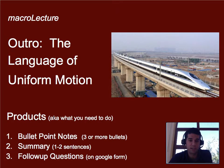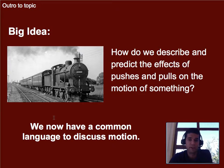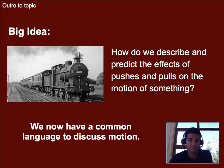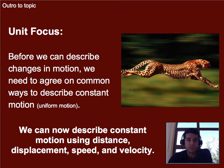We've been talking about the language of uniform motion. Uniform just means consistent — in this case it's constant speed or constant velocity. The big idea we were trying to begin approaching, and we're not there yet, it's going to be ongoing for the next couple of units, is this idea of how to describe and predict the effects of pushes and pulls on something. Now, in our effort to get toward that, we have a common language to discuss motion. We at least know what motion means and how to describe it a little bit better. Our unit focus was: before we can describe changes in motion, we need to agree on common ways to describe it.